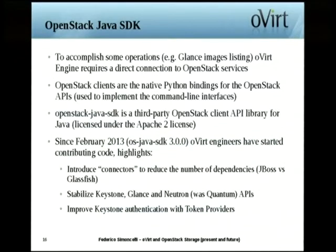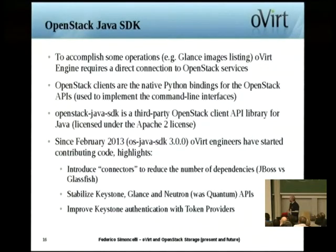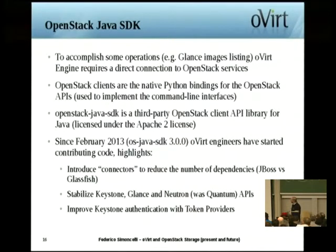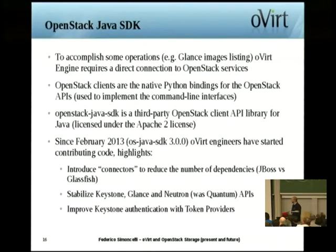For some operations we do from the oVirt perspective, we needed to interface with OpenStack services. OpenStack provides, at the moment, only Python bindings for that, but the engine in oVirt is written in Java. So we also started contributing to the OpenStack Java SDK as a means of communication between the engine and the OpenStack services. We tried to stabilize it and add support for the things we needed.